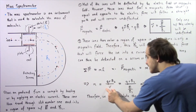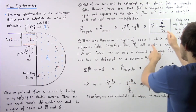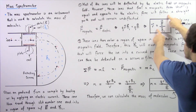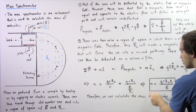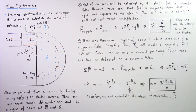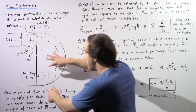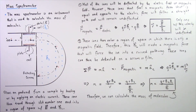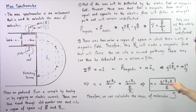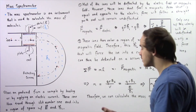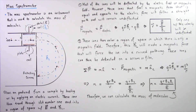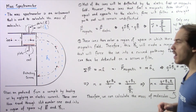The velocity of our ion is given by E/B1, so we substitute V with E/B1. This brings B1 to the numerator, and we find that the mass of our ion is equal to Q × R × B2 × B1 / E. All these quantities are either known or can be measured, so using this equation we can calculate the mass of our molecules.